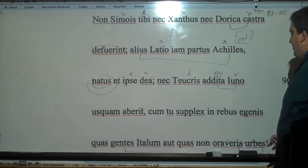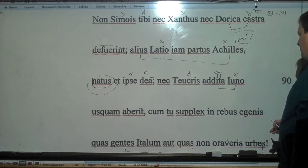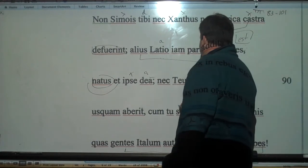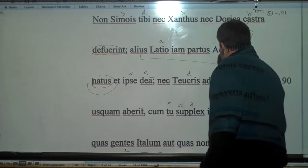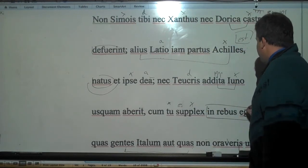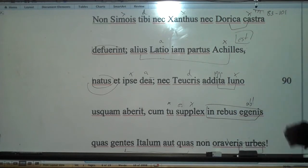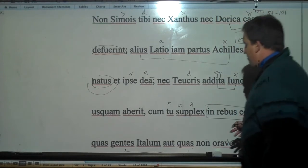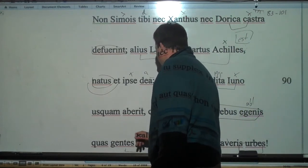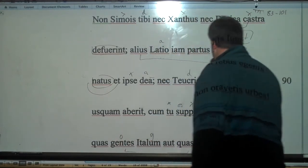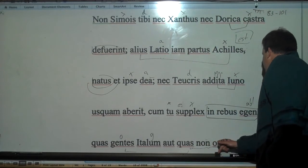And when you are a supplicant in needy things - this is a prepositional phrase. And when you are a supplicant in needy things, she says, what peoples of Italy, genitive of the Italians, what peoples of the Italians, or what cities...